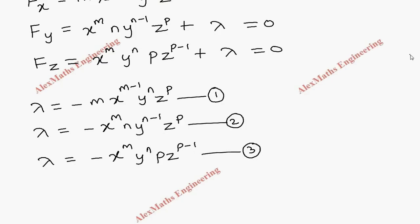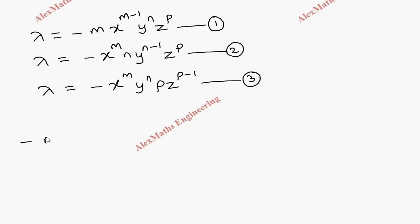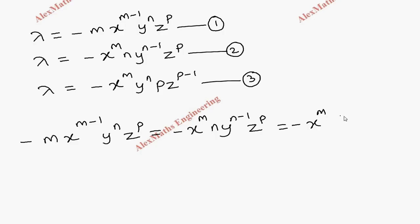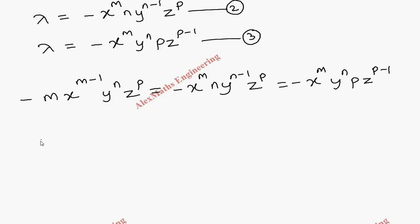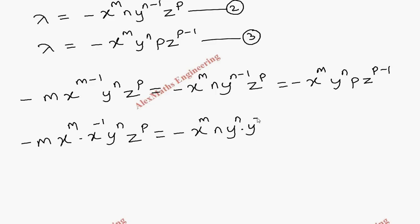Since all three expressions equal λ, we equate them: −m·x^(m−1)·y^n·z^p = −x^m·n·y^(n−1)·z^p = −x^m·y^n·p·z^(p−1). We split x^(m−1) as x^m · x^(−1), y^(n−1) as y^n · y^(−1), and z^(p−1) as z^p · z^(−1).